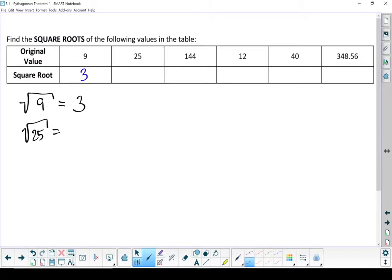Square root of 25. Well, 25 is 5 times 5. Square root of 25 is 5. Some of these are nice, neat, perfect squares, but not all of them are. Let's jump to the last two. Square root of 40. If I use the square root button on my calculator, I end up with square root of 40 being 6.34. Square root of 348.56 ends up being 18.67. Yes, I rounded it off.